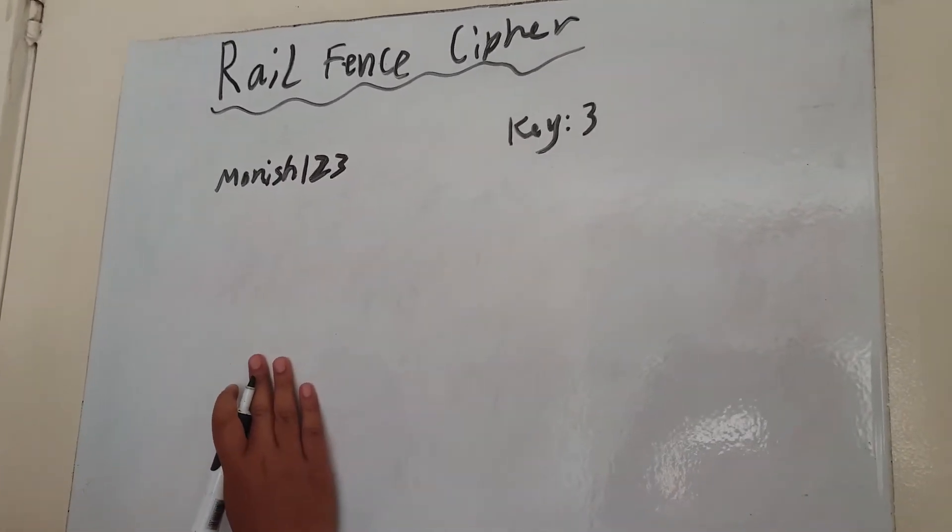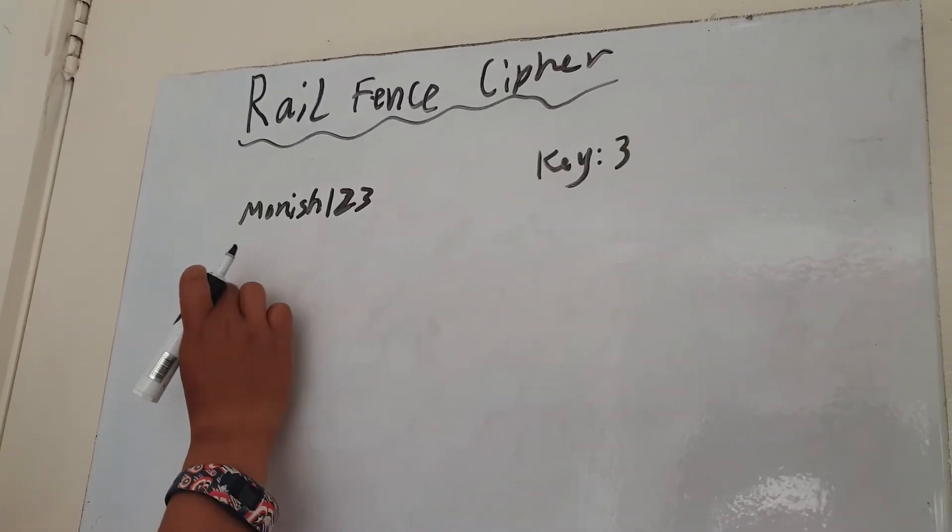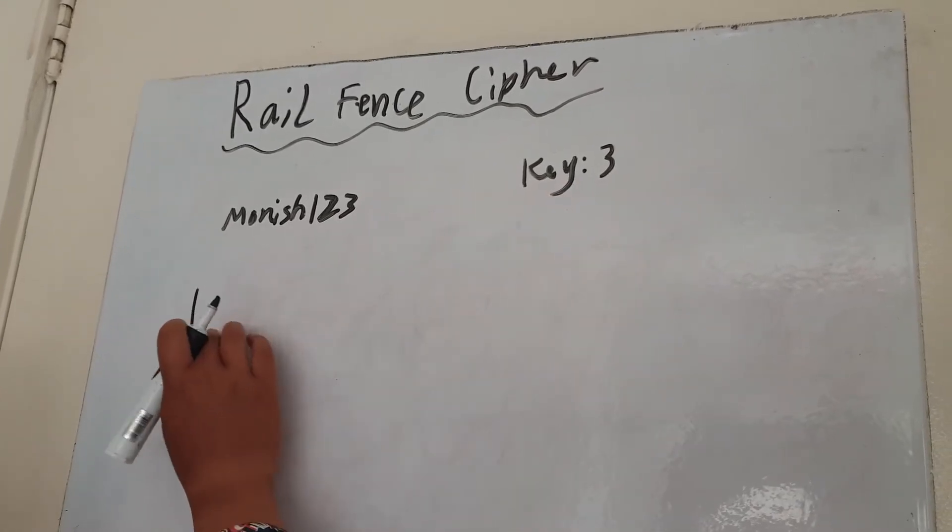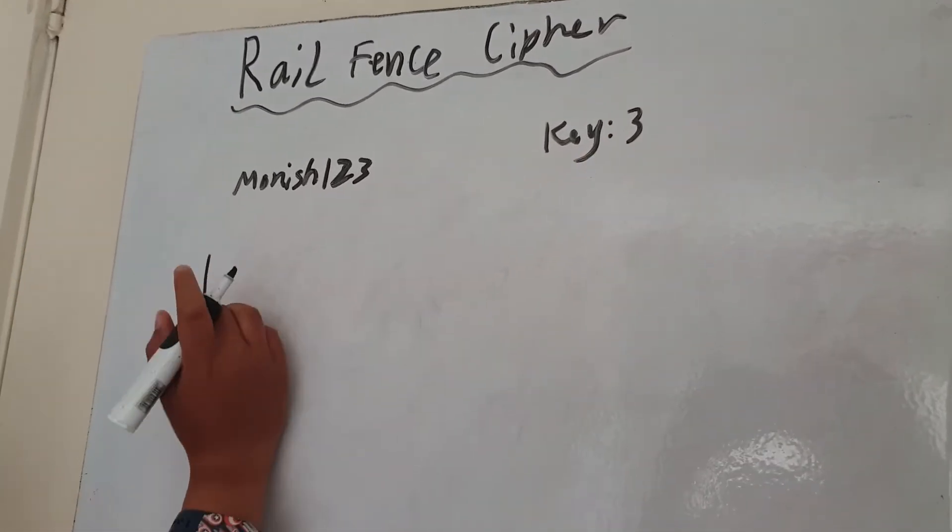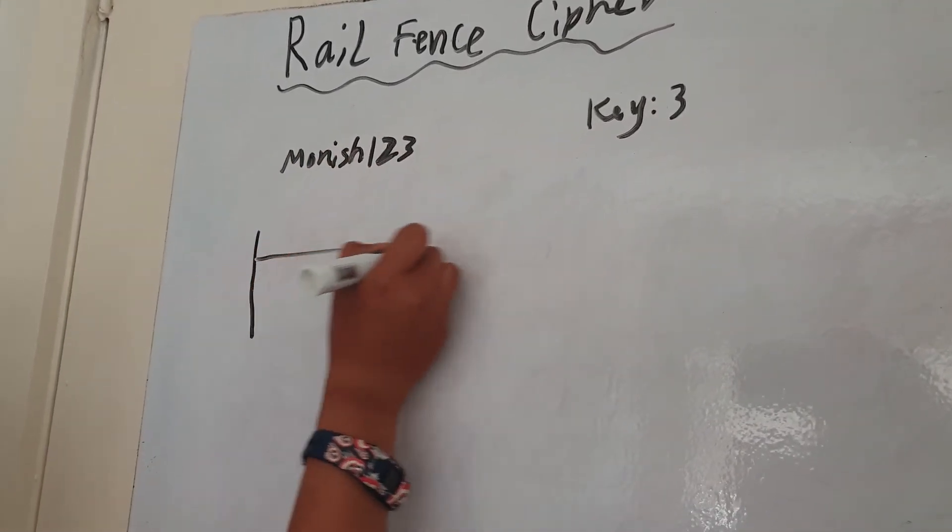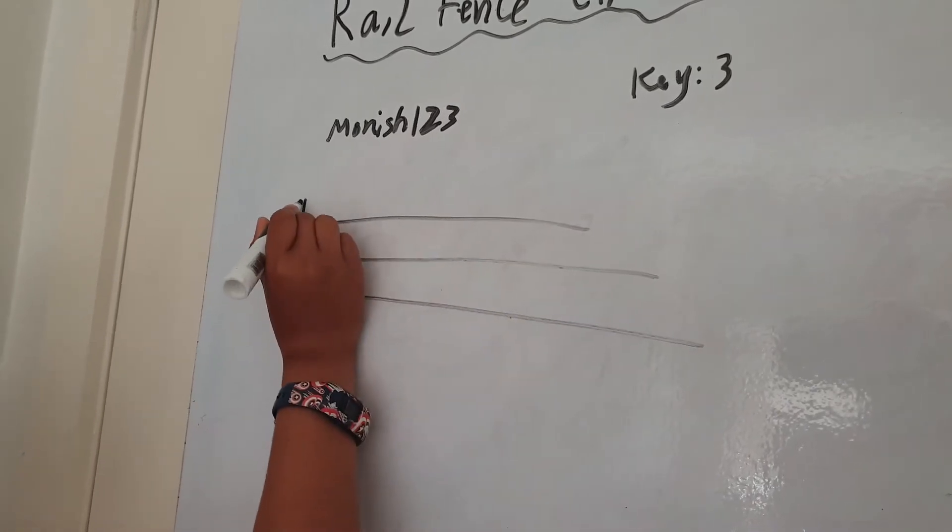So the first thing you need to do is you need to draw a table that has the key amount of rows. So in this case, the key is three, so it has three rows. So this table has three rows.